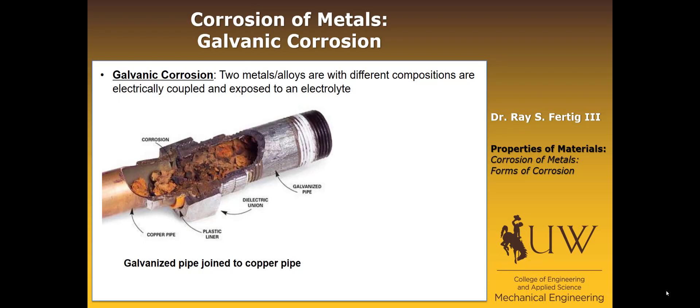There are several ways we can mitigate this kind of corrosion. One that I hope comes to mind first is that we could choose metals that are close together in the galvanic series. The further apart they are in the galvanic series, the greater their potential and the more driving force there is for the reaction. So if we choose metals that are closer together, their potential is lower and their reactivity is going to be lower.